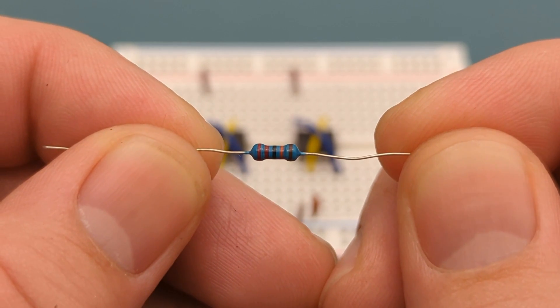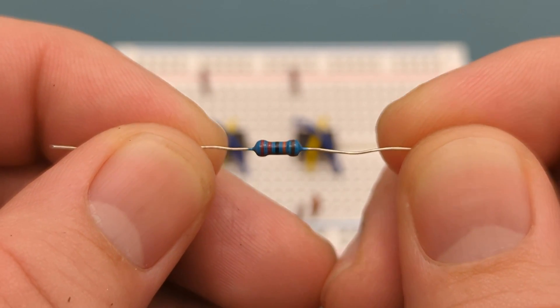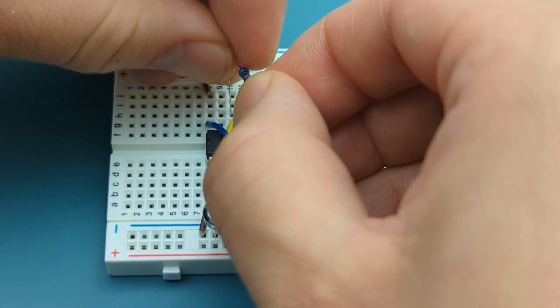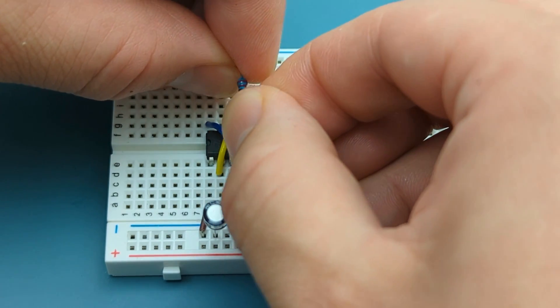Bend the ends of a 220 kilo ohm resistor. Insert the 220 kilo ohm resistor into pin 3 or output and pin 6 or threshold.